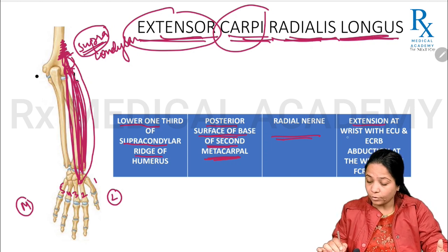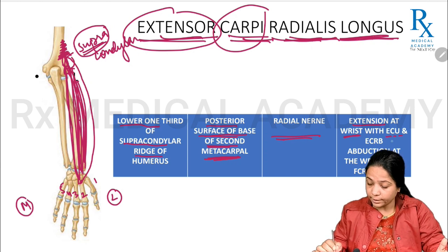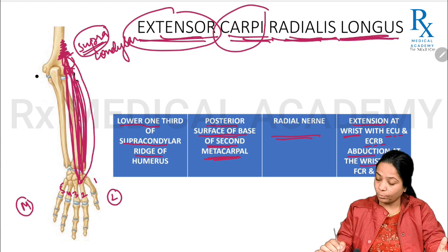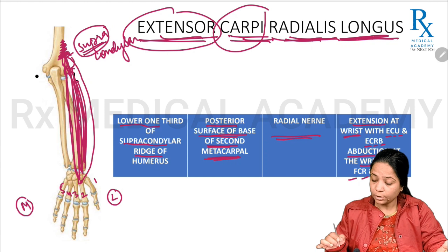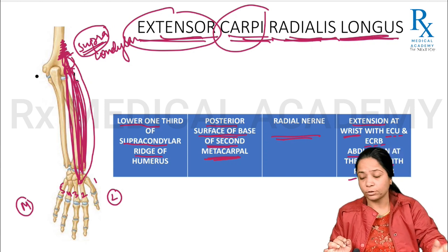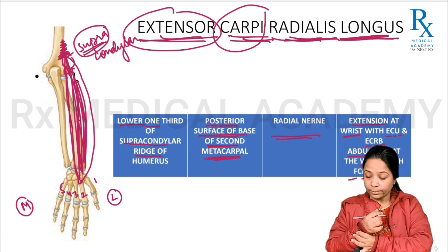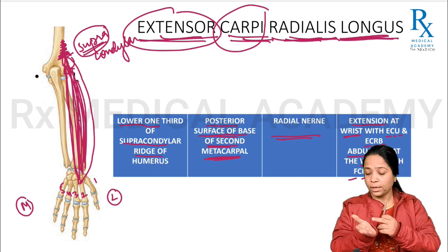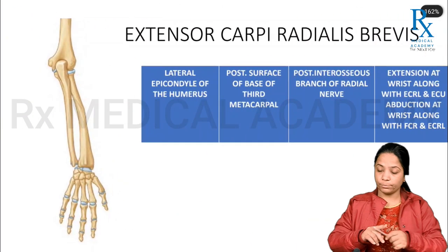Extensor carpi radialis longus is supplied by the radial nerve. Its primary function is to produce extension of the wrist joint, aided by extensor carpi ulnaris and extensor carpi radialis brevis. It also produces abduction at the wrist joint together with flexor carpi radialis and extensor carpi radialis brevis.